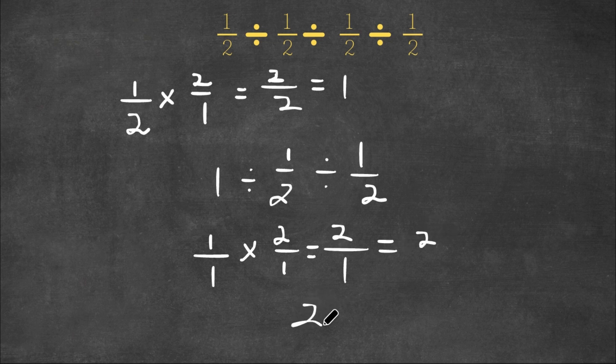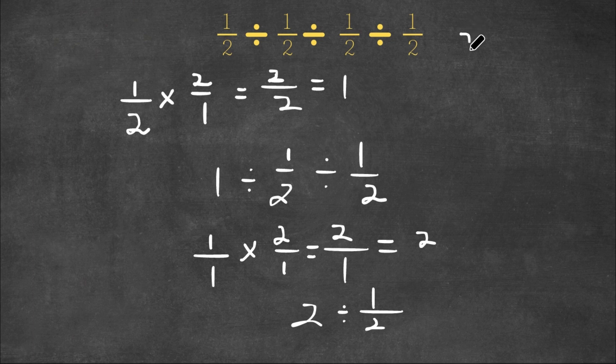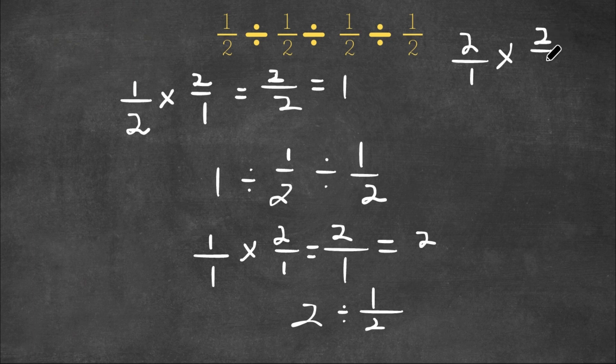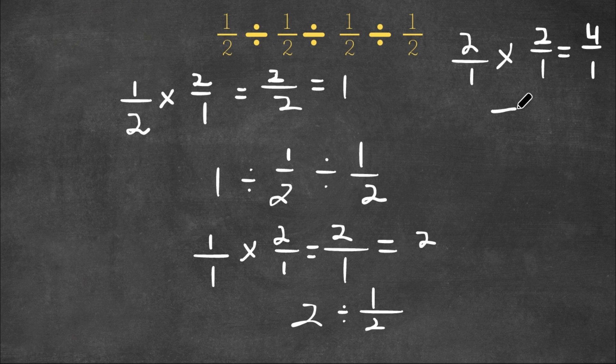So now we are left with 2 divided by 1 half. Now, 2 is the same thing as 2 over 1. Now we flip the sign, and we find the reciprocal. The reciprocal of 1 half now is 2. Now 2 times 2 is 4, and 1 times 1 is 1. So this is equal to 4. And that's our answer.